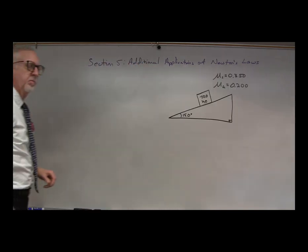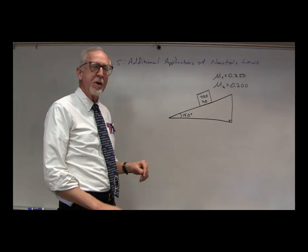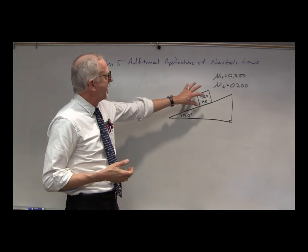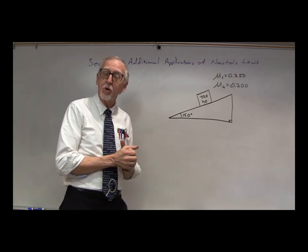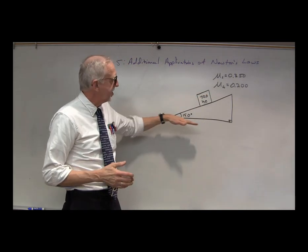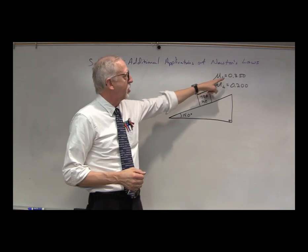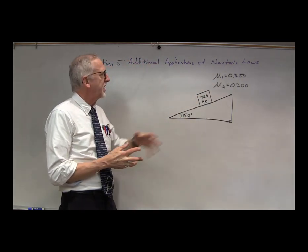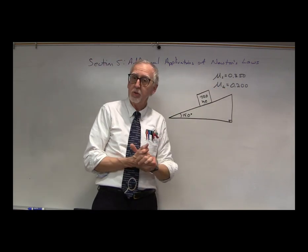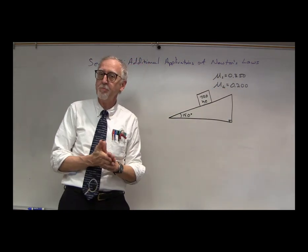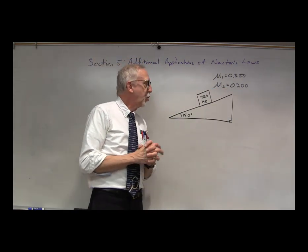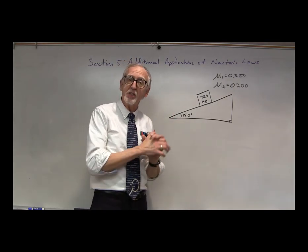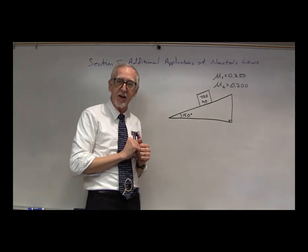Let's try another friction problem and look at it in several different ways. Let's imagine we have a 75 kilogram crate on a 15-degree incline, and there is a coefficient of static friction of 0.350 and a coefficient of kinetic friction of 0.200. First, let's figure out what's going to happen with this crate — if it starts out stationary, is it going to stay there or will it start sliding?